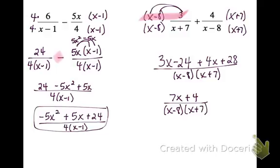Now I need to check if I can factor the top. I can't — there's no common factor between 7 and 4, so this is just my final answer.